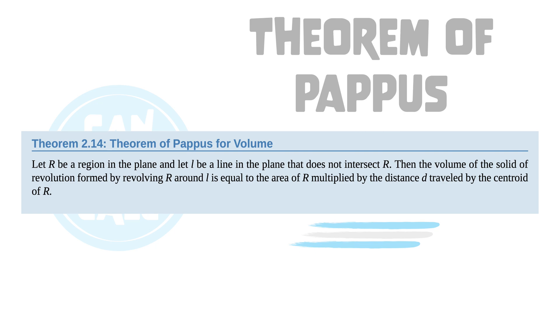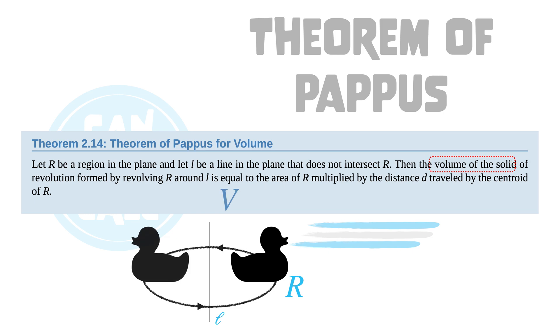The theorem of Pappus requires a region R. Let's take region R to be this duck. Second, we need a line not intersecting R. The theorem provides a formula for computing the volume of the region R rotated about the line L.